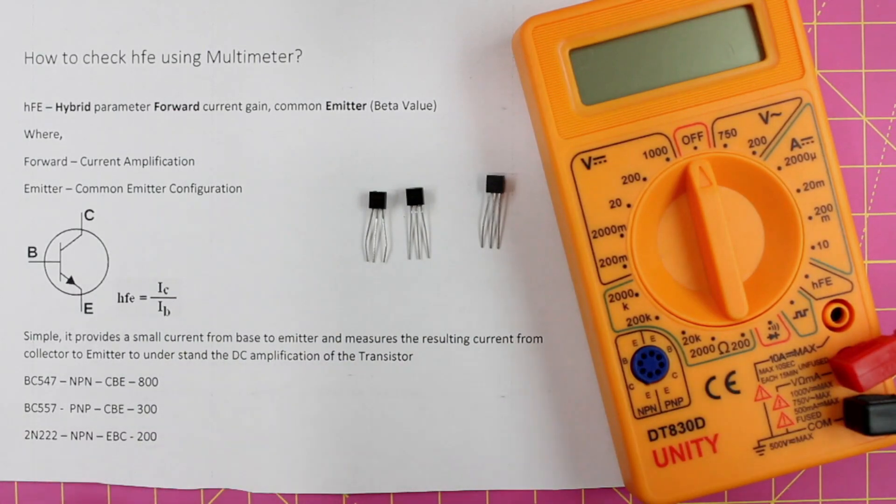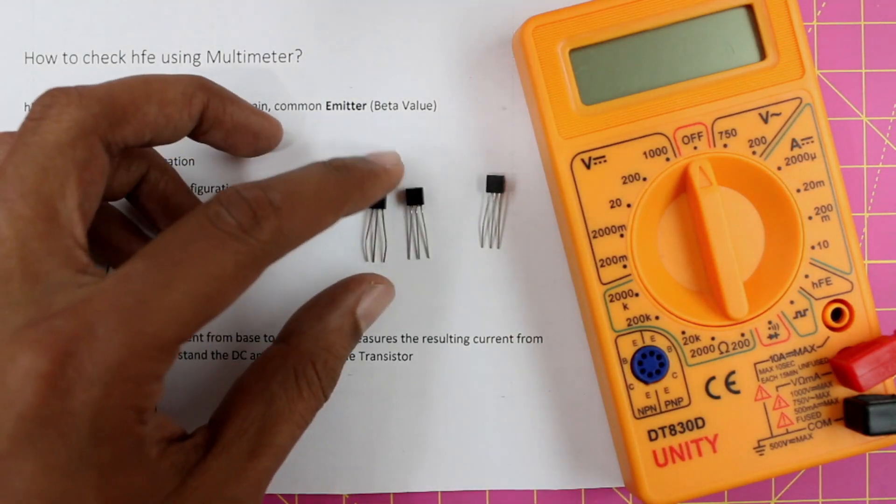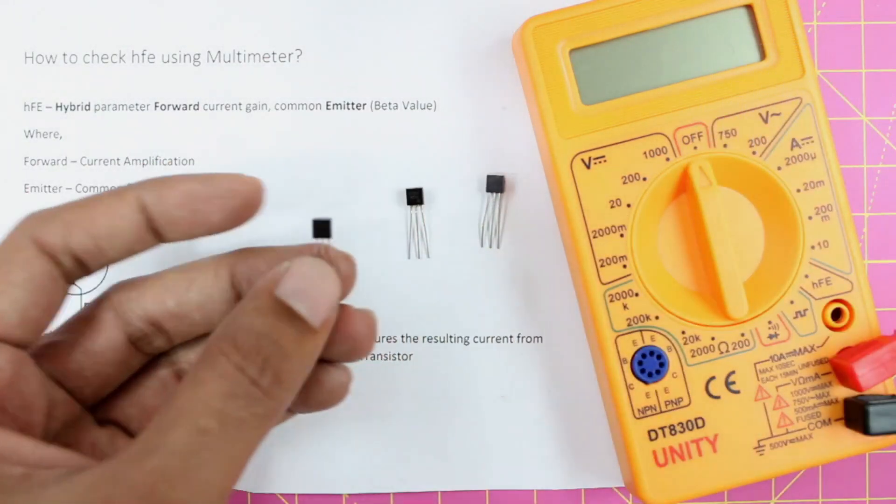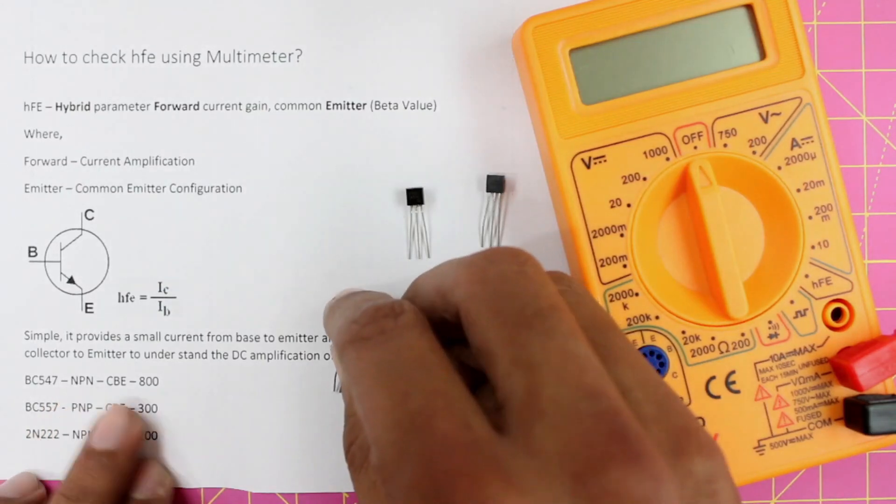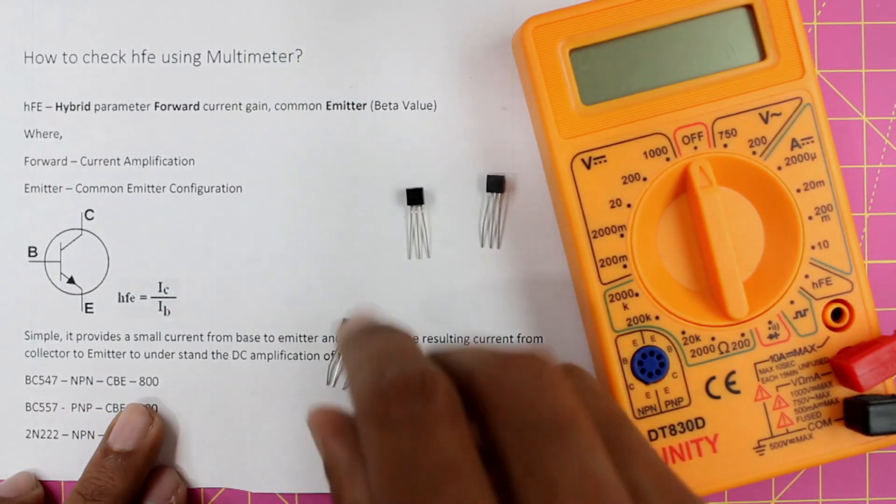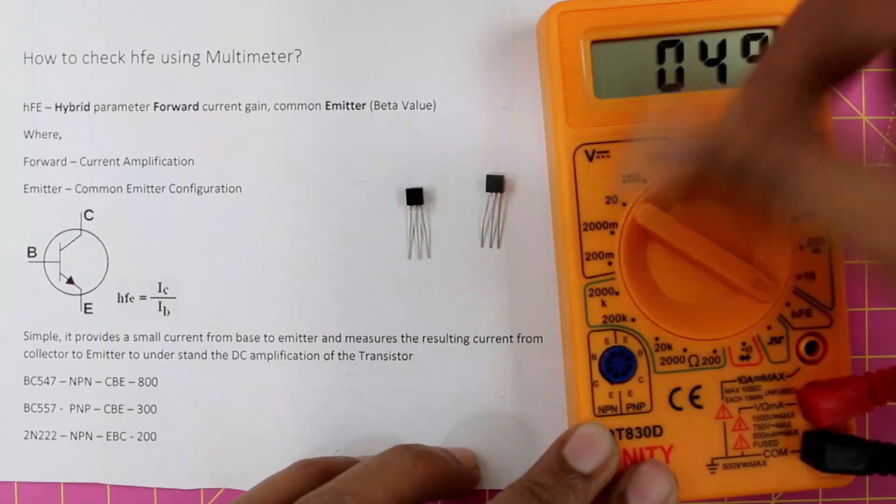Before we get in, we have to figure out a few things about the transistor which we are going to measure the beta value of. For example, this one here is a BC547 transistor which is NPN. The first terminal is collector, second terminal is base, and the third terminal is emitter. Now on the multimeter to check the beta value, put your dial in HFE mode.